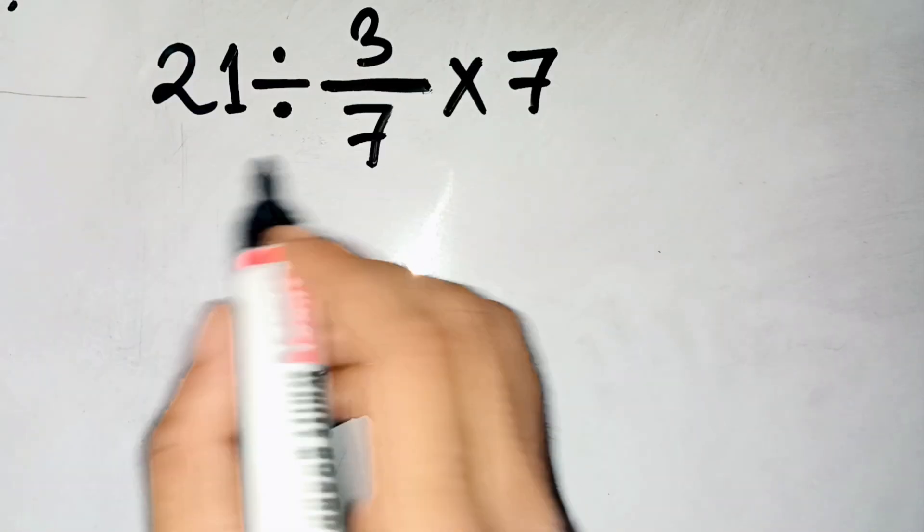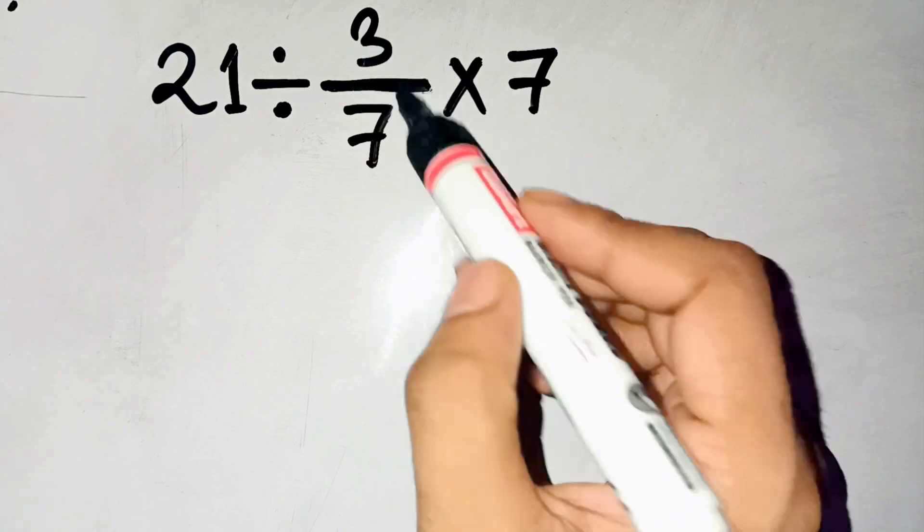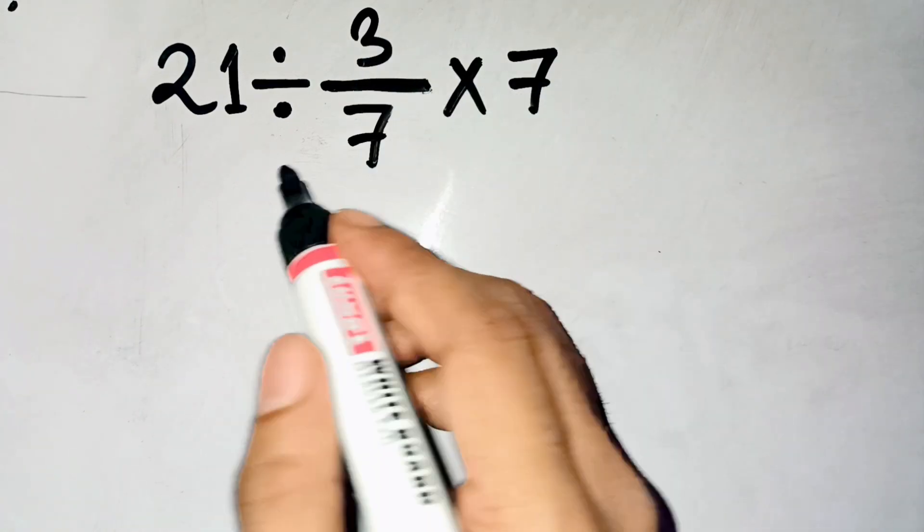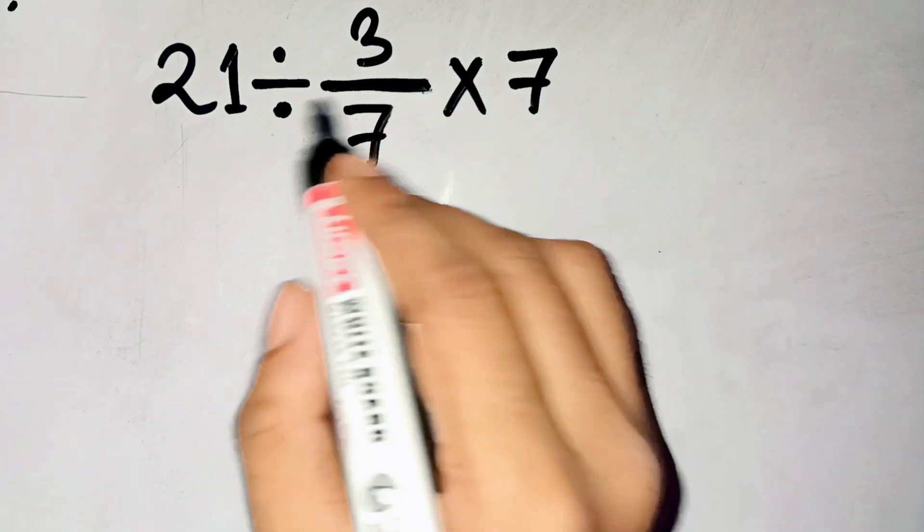Alright, let's come to the point. The problem is this: 21 divided by 3 over 7 times 7. Now, the main confusion happens because of how we read it.